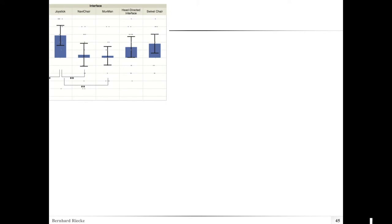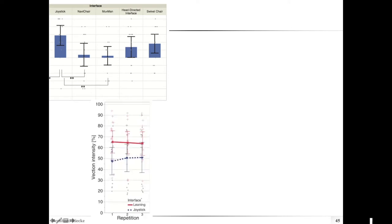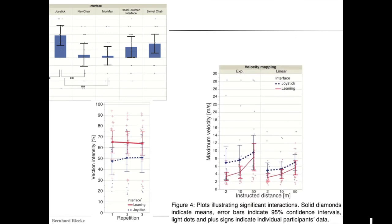If you have a control condition, it can be useful to indicate this as well. Showing individual differences with lines can be a useful trick. Here's a bit more complex two-by-three plot, and then a two-by-two-by-three data plot — you can see it's already getting really hard to interpret. Try plotting the data in different arrangements to figure out which way makes the most sense.